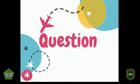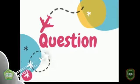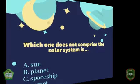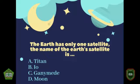Before the video is finished, here are two questions. First: which one does not comprise the solar system? A) Sun, B) Planet, C) Spaceship, D) Comet. Second: the Earth has only one satellite. The name of the Earth's satellite is: A) Titan, B) Io, C) Ganymede, D) Moon.